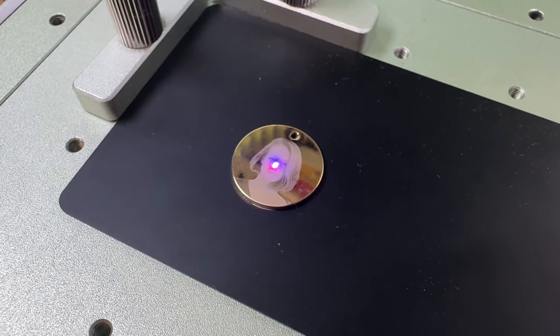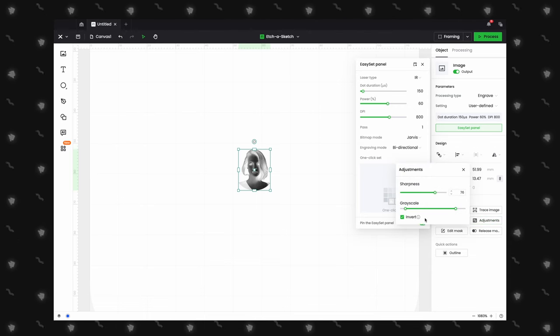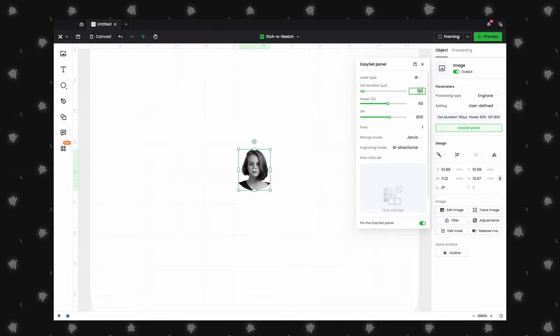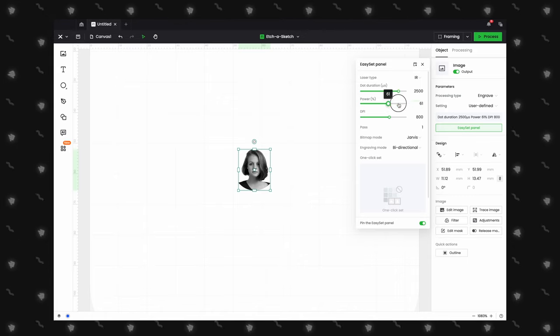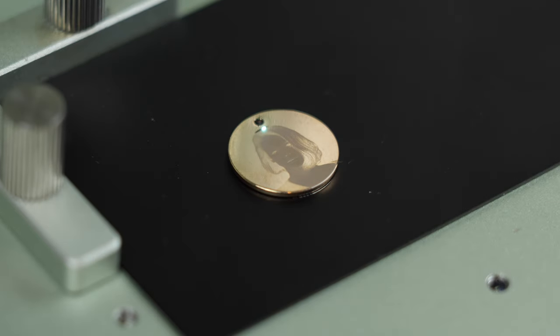Okay, now back to XCS. We want to click on our image and disable the invert image option. For this pass, we want to do a dark engraving. So we will set dot duration to 2500 and power back to 100%. And click start. Now this will go through and engrave all the dark shadows of the image.